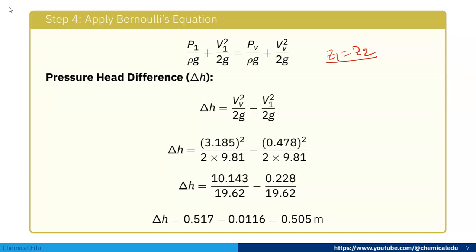Now pressure head difference Δh is P₁/(ρg) - Pv/(ρg), which equals h₁ - h₂ = Vv²/(2g) - V₁²/(2g). Plugging in values: (3.185)²/(2 × 9.81) - (0.478)²/(2 × 9.81) = 10.143/19.62 - 0.228/19.62.